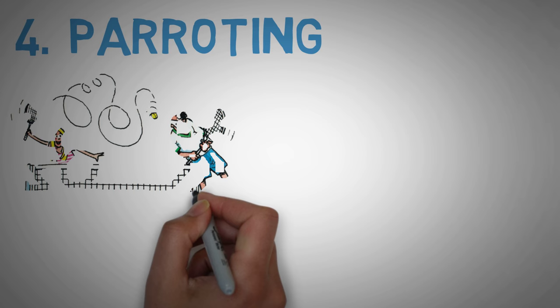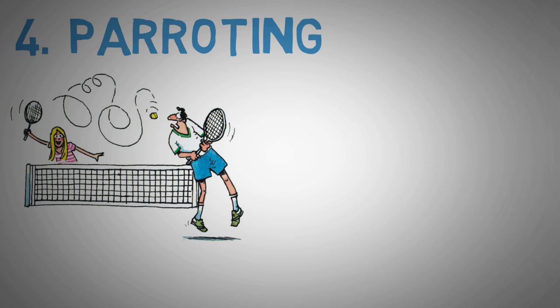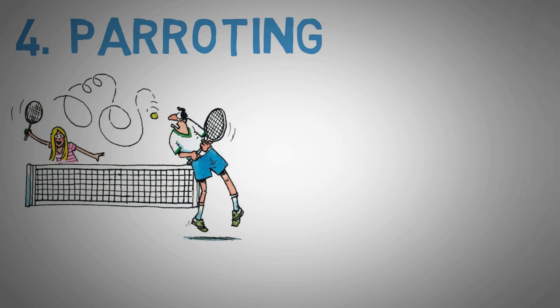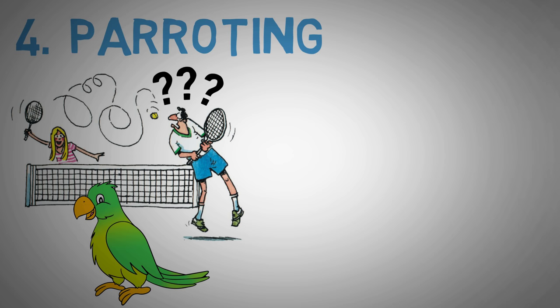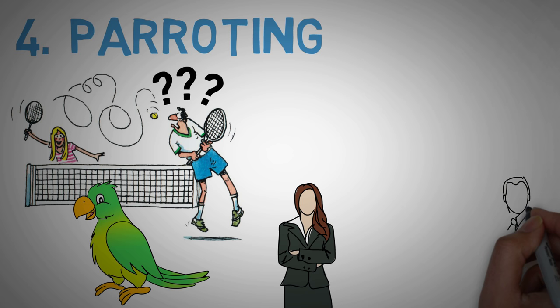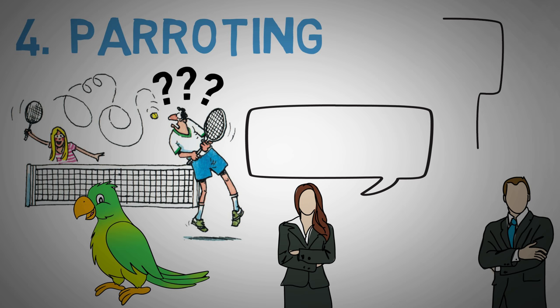Technique number four, parroting. You know in tennis how the ball is going back and forth over the net. Likewise in conversation, the conversational ball goes back and forth. First you speak, then your partner speaks, then you speak and so on. Now, what if the ball lands on your court and it's your turn to speak, but your mind goes blank? Don't panic, just repeat or parrot the last two or three words your companion said in a sympathetic, questioning tone. That throws the conversational ball right back into your partner's court and then all you need to do is listen.